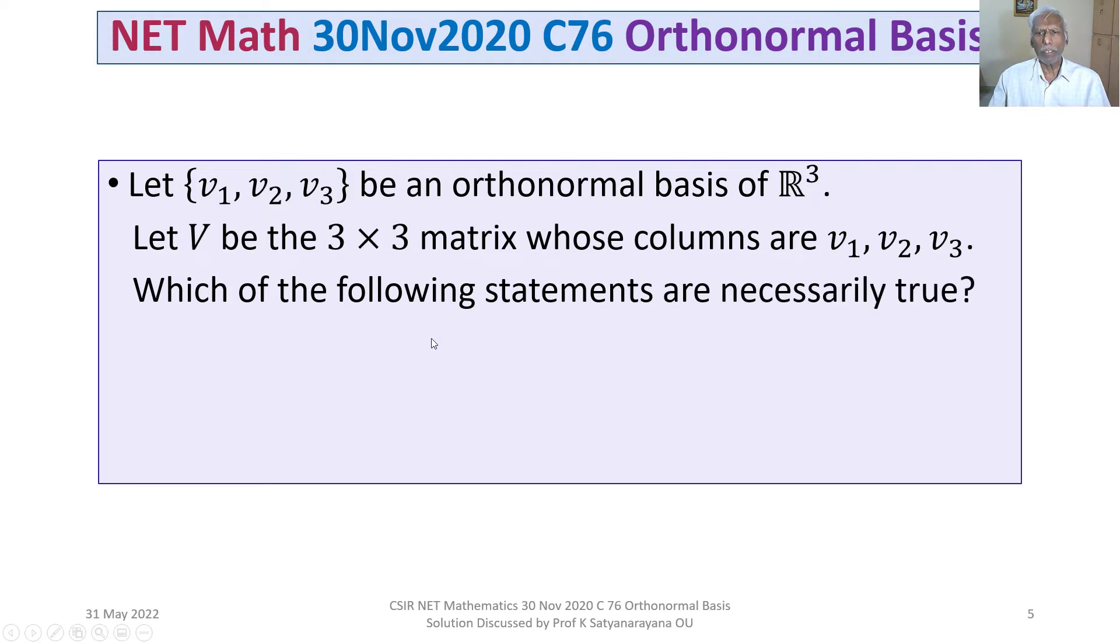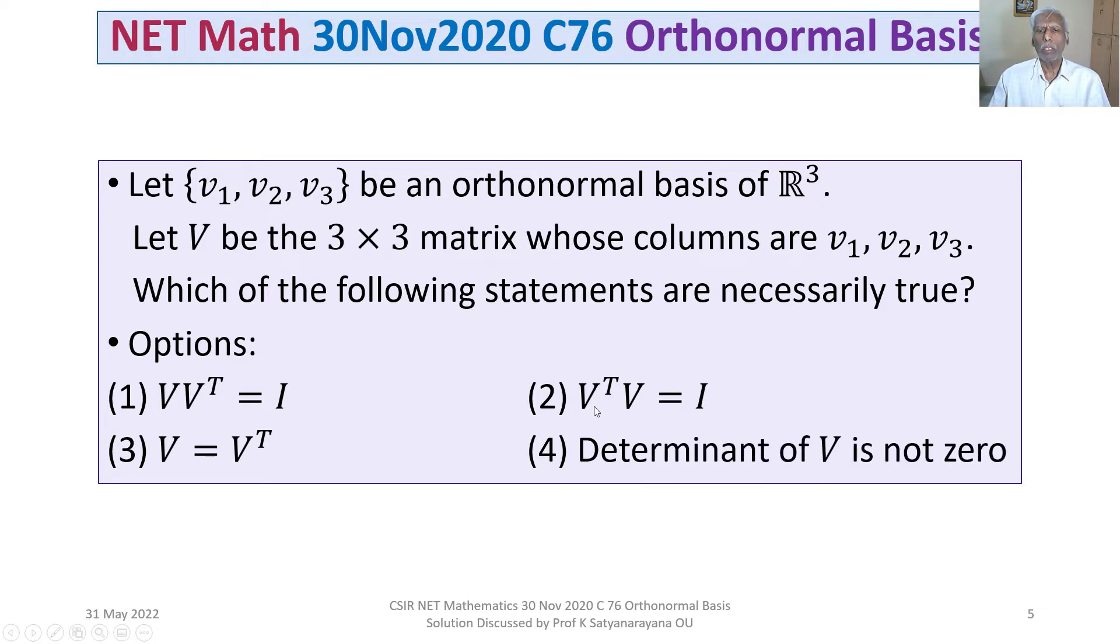Which of the following statements are necessarily true? We are given 4 options. Option 1: VVᵀ = I. Option 2: VᵀV = I. Option 3: V = Vᵀ. Option 4: determinant of V is not zero.